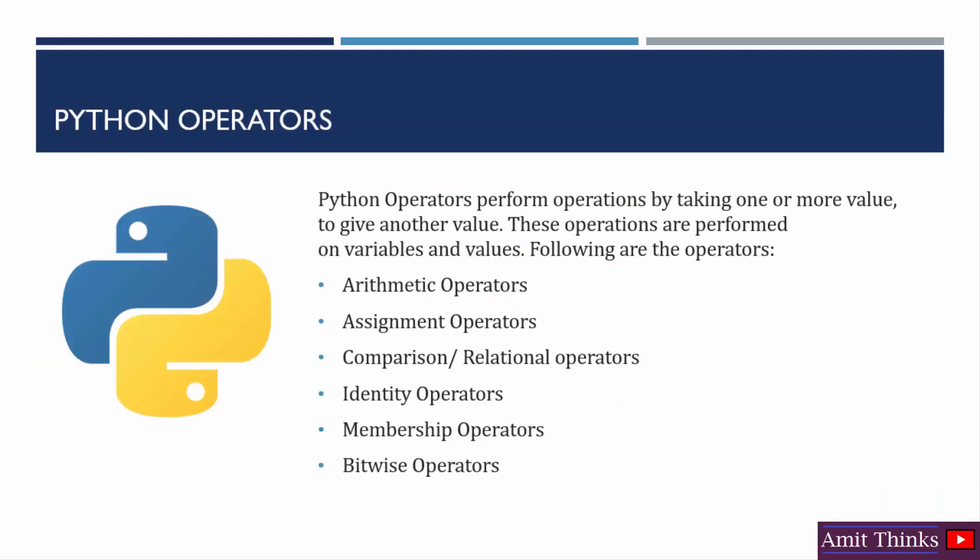Python operators are used to perform operations on variables and values. For example, if you want to add two variable values, assign a variable value to another variable, compare variable values, or find a greater or lesser value from two variables, we use operators. We also use bitwise operators. We will see all these operators one by one.